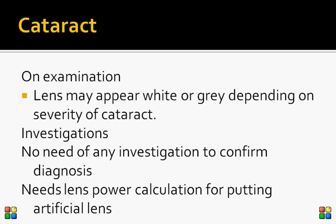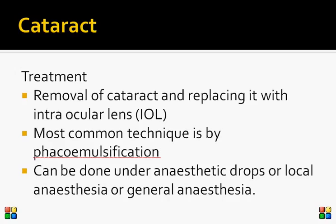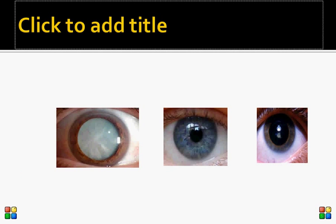To calculate the power of the artificial lens to be implanted after removing the cataract, a formula is used. Treatment is by surgery — there is no role for drops or medication to cure cataract. The cataract is removed and an artificial lens is placed in its position. The most commonly done technique is phacoemulsification, which uses ultrasound to emulsify the lens. Anesthesia can be topical drops, local block around the eye, or general anesthesia.